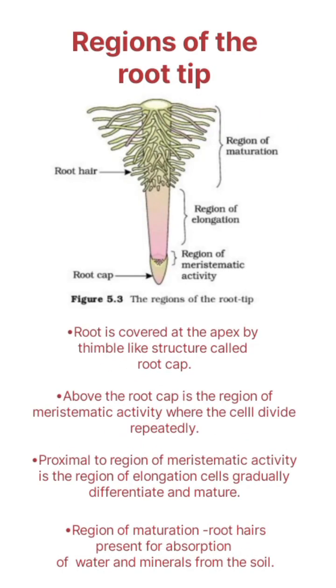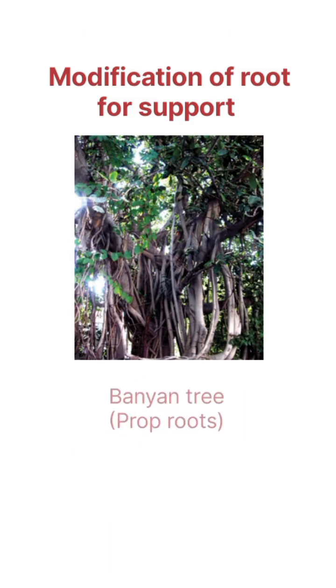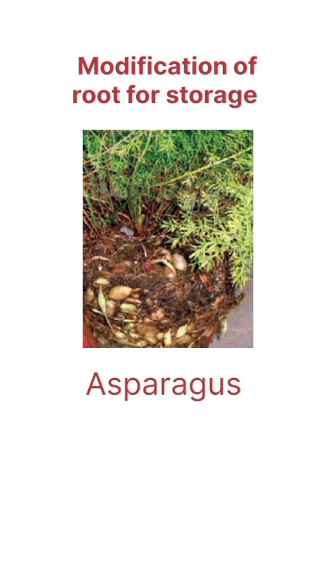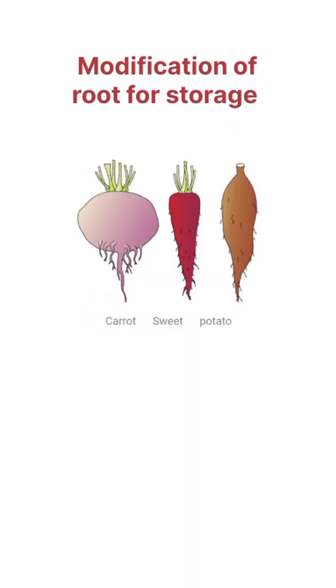Regions of root tip. Modification of root for support — Banyan Tree: 4. Prop Root. Modification of root for storage — Asparagus.